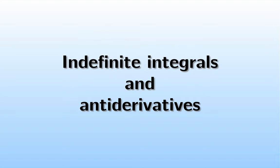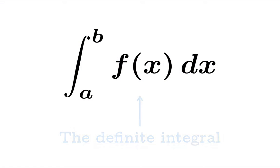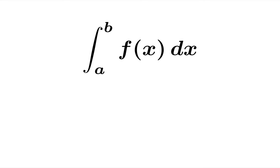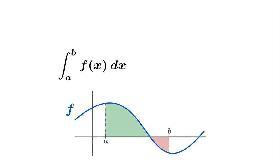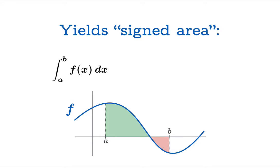In this video, we're going to look at indefinite integrals and antiderivatives. Here's the notation for something we've called the definite integral. It's a gadget that measures signed area. Here we have a function f on the interval from a to b. In this case, the definite integral is going to yield the area above the horizontal axis minus the area below the horizontal axis.